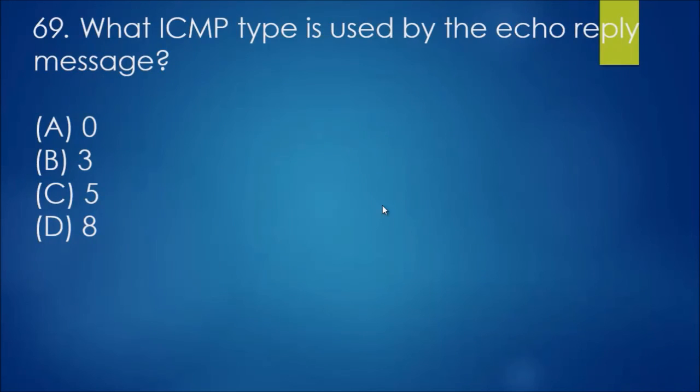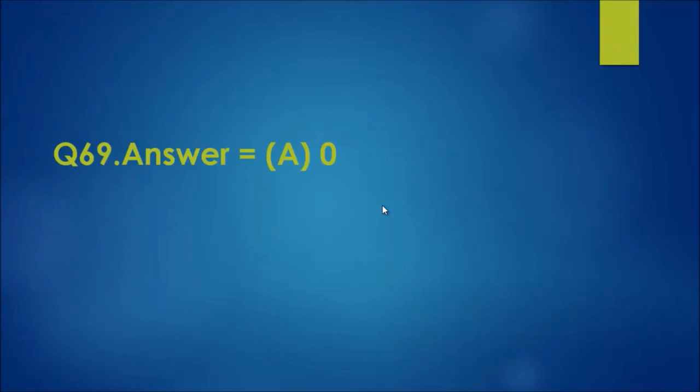Question 69: What ICMP type is used by the echo reply message? This is one of those rote answers you just have to know. That is type 0, the answer is A. Obviously, the other one is 8.